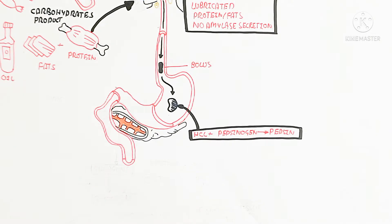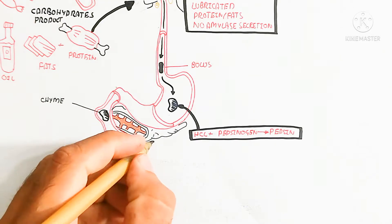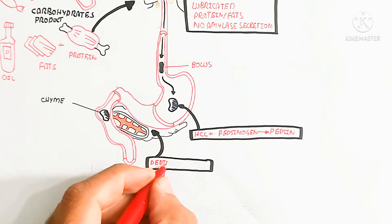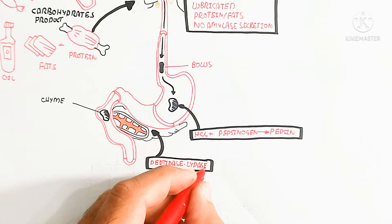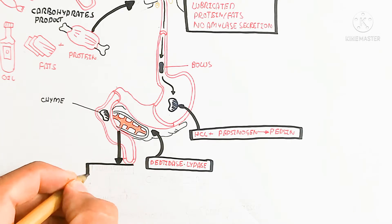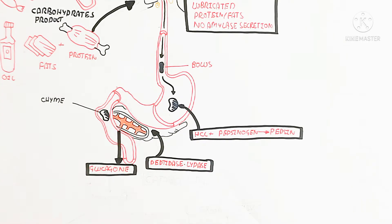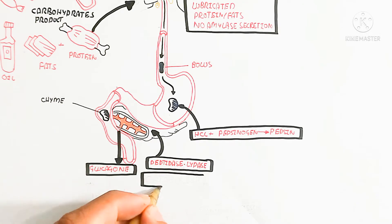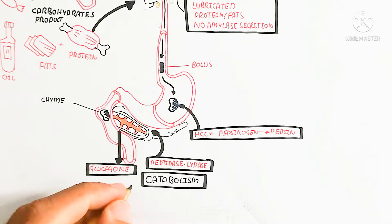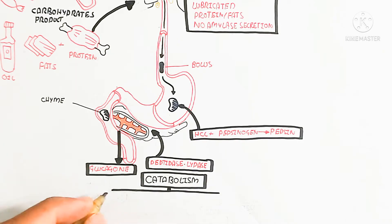This chyme — partially digested protein broken down from polypeptides into oligopeptides — goes into the duodenum and is further digested by dipeptidase, tripeptidase, and other enzymes. Fat is also digested by pancreatic lipase, and chymotrypsin and trypsinogen are converted into active forms to further digest the chyme.